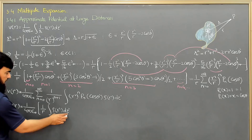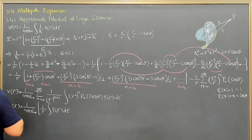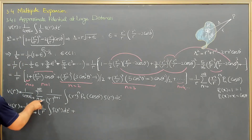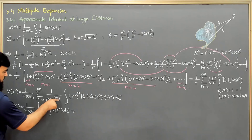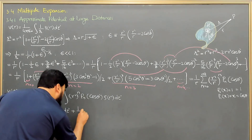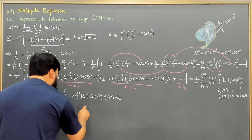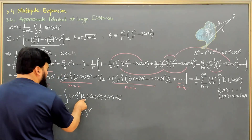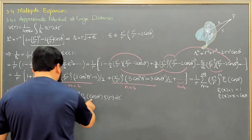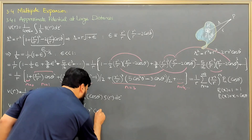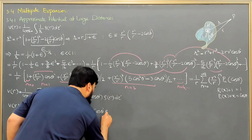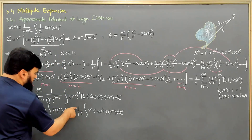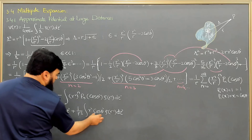When n equals 1: r to the power n plus 1 becomes r squared, so we get 1 over r squared. With n equals 1, r prime to the power 1 gives r prime, and P_1 of cos theta becomes cos theta prime. So the n equals 1 term is (1/4π epsilon naught) times (1 over r squared) times the integral of r prime cos theta prime rho(r prime) d tau prime.